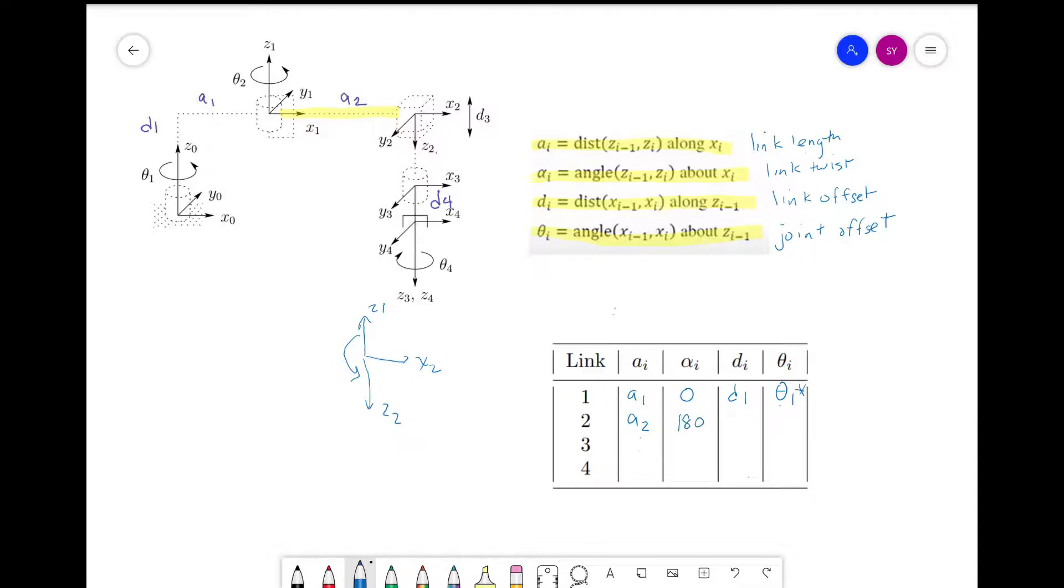D_i is zero because the distance from x_1 to x_2 along z_1 is zero. Now for theta, we have a joint variable of theta_2. We'll mark this with a star. There's no additional rotation needed to align the x_1 and x_2.